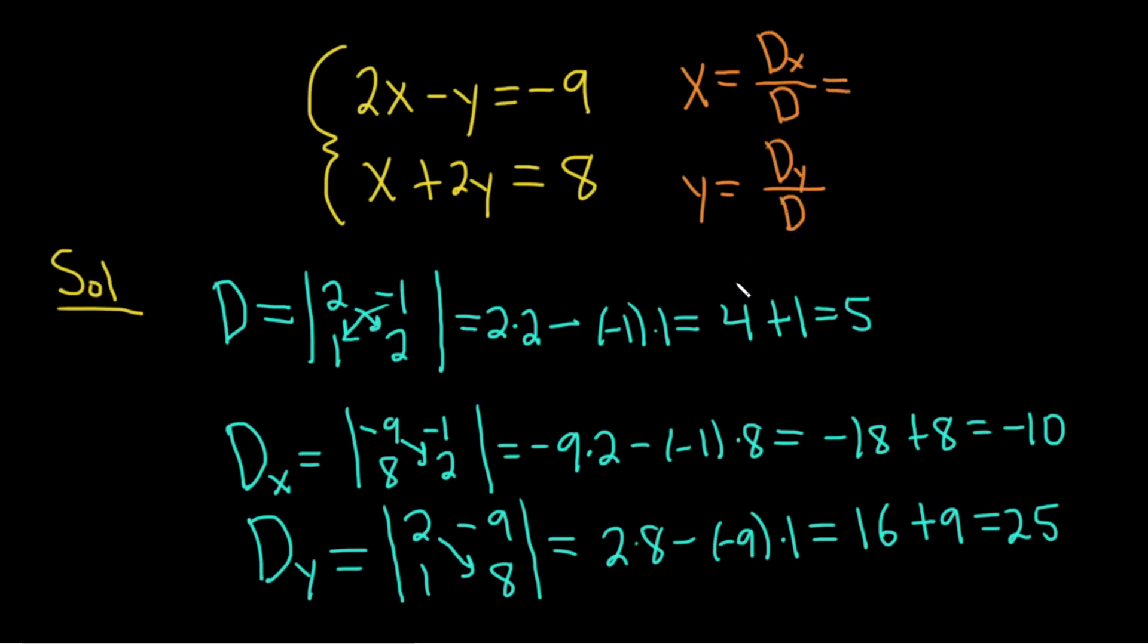Big D sub x, in this case, we said was negative 10. And Big D is 5. So x is equal to negative 2. Boom. And then Big D sub y is 25. And then Big D is 5. So that's equal to 5.